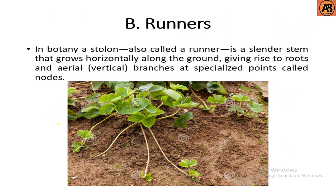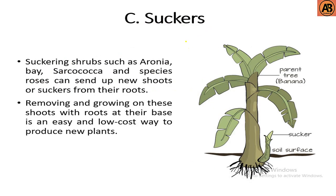Next is runners, another type of asexual propagation. In botany, a stolon, also called a runner, is a slender stem that grows horizontally along the ground, giving rise to roots and aerial vertical branches at specialized points called nodes. In the picture we can see runners propagation — this is called stolon or runners — and we can see that new plants arise from the runners.